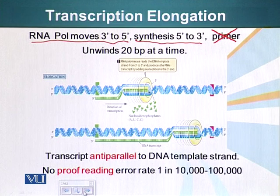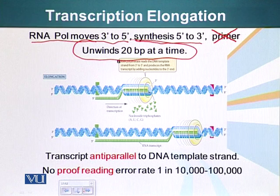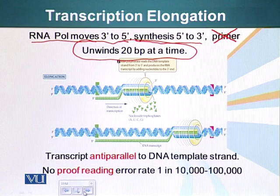The RNA polymerase unwinds about 20 base pairs at a time, and as it moves along it is making the RNA transcript. The transcript is anti-parallel to the DNA template strand — we have talked about what that means in detail.